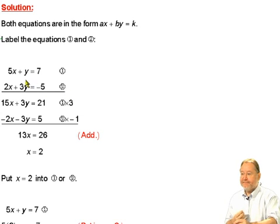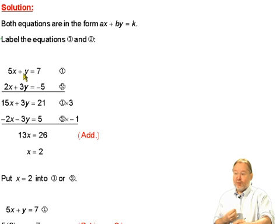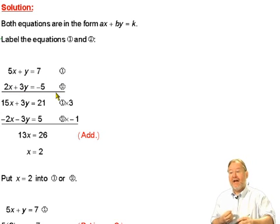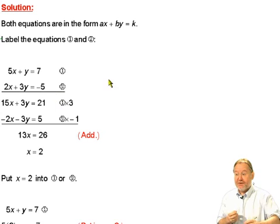Now, what I'm going to do is, the number in front of y here is 1, even though it's not written there. And the number in front of y here is plus 3. So I have a plus 1 here and a plus 3 there. So what I'm going to do is multiply every part of the first equation by 3.